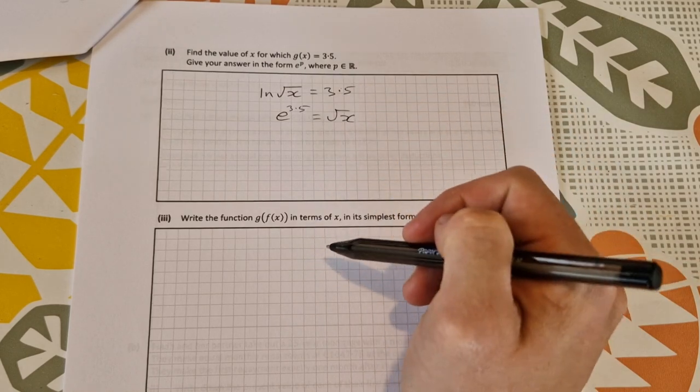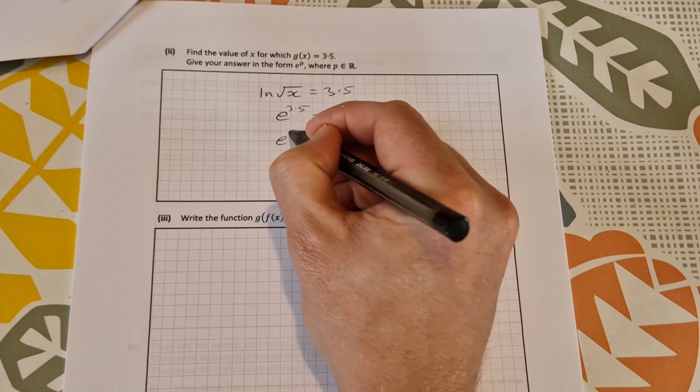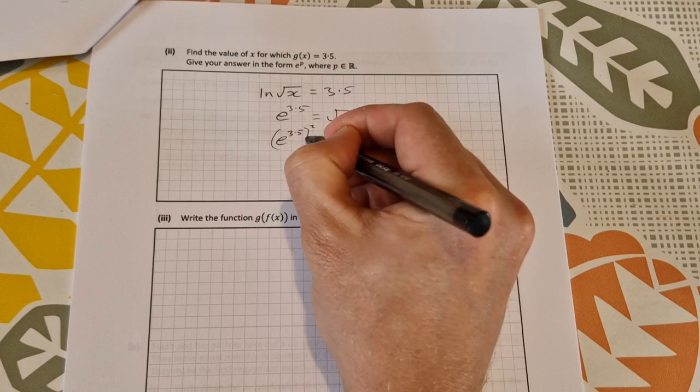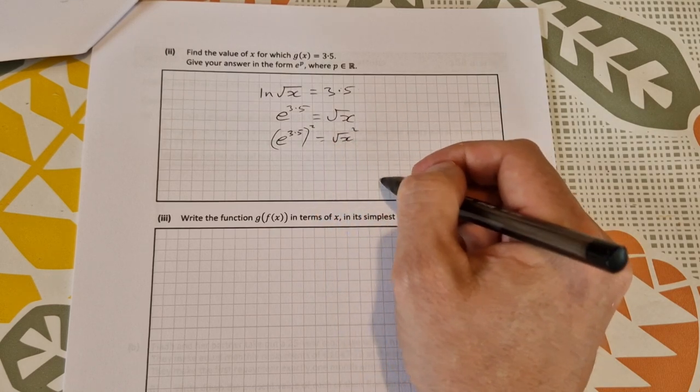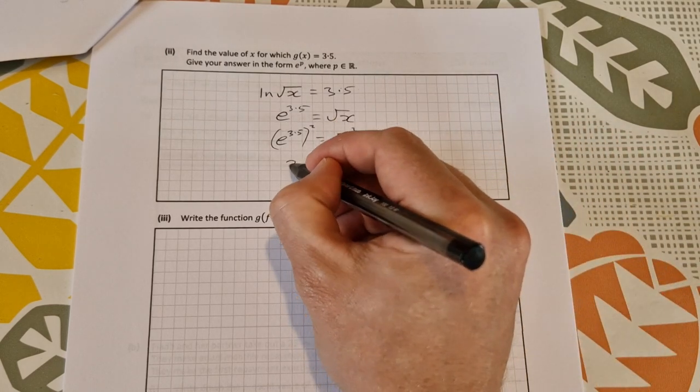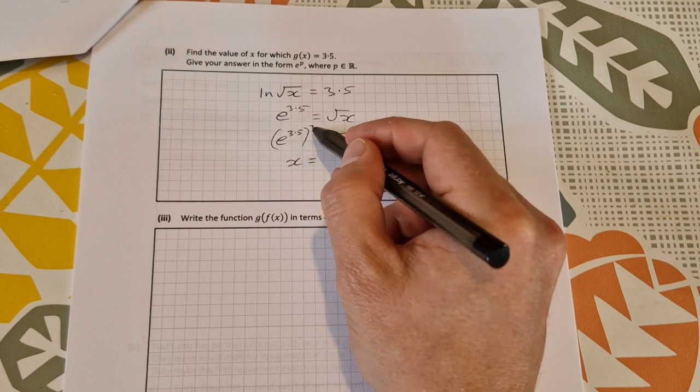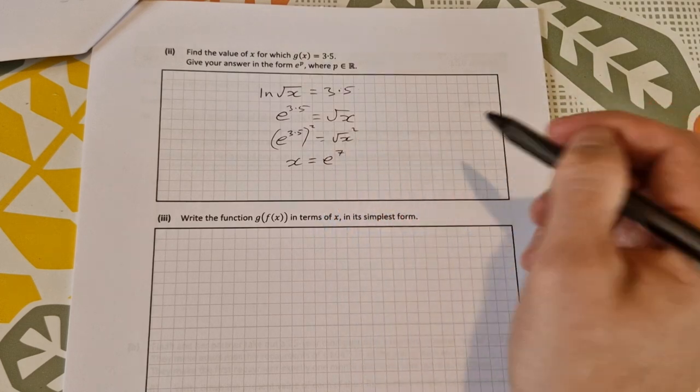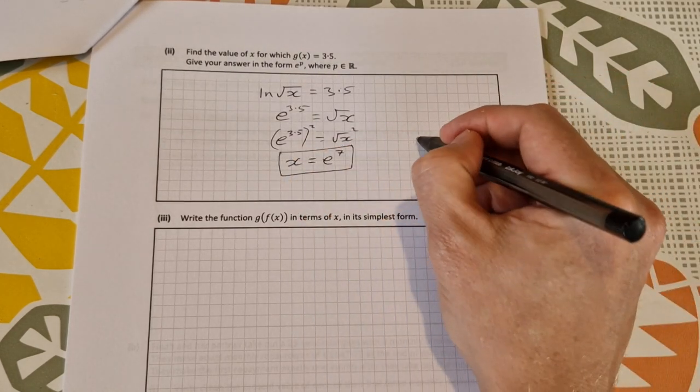Square both sides to get rid of the root, so (e^(3.5))² = (√x)². Square and root x obviously gives you x, so x = (e^(3.5))² = e^7, which is the form that they want. So x = e⁷ for 5 marks.